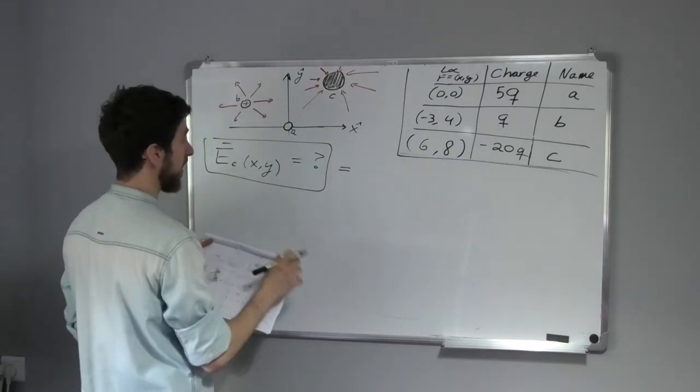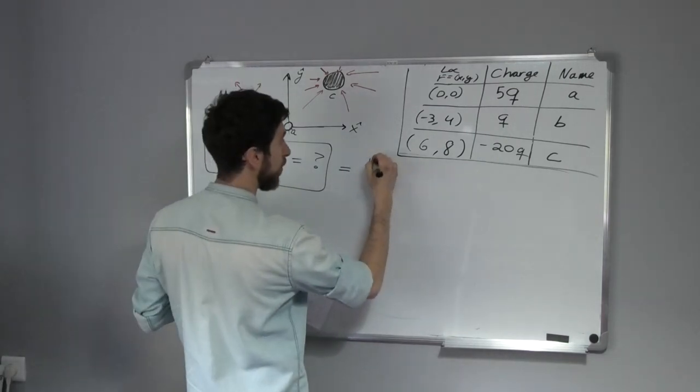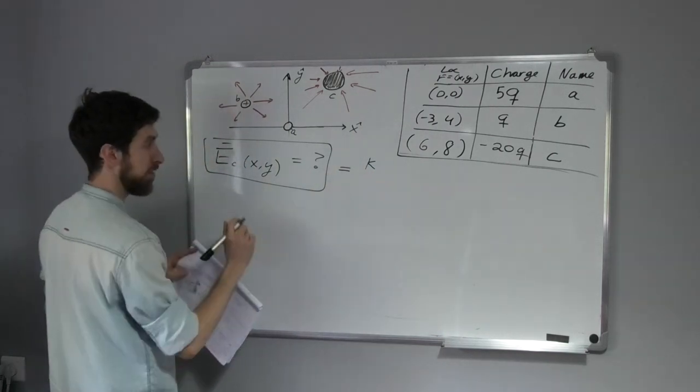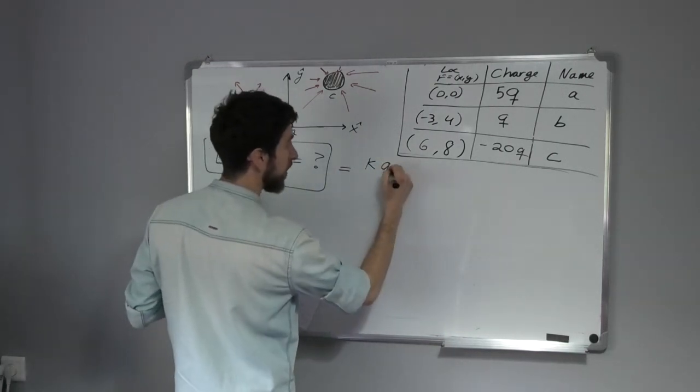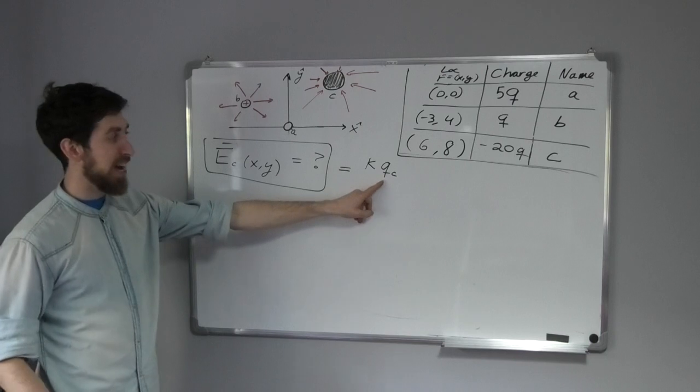K, this constant, times Q_C, the one that applies the electric field on the wall.